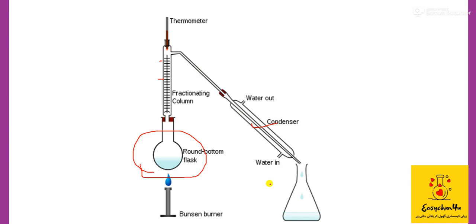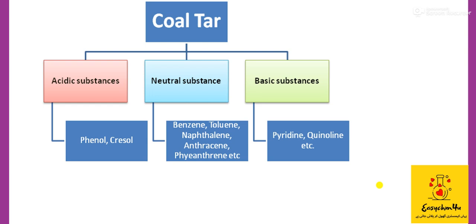Basically, the difference in boiling points allows separation. Two liquids convert into vapors at different temperatures and are collected separately through condensation. For coal tar, this same method is used at the industrial level, and we get three different types of substances: acidic substances, neutral substances, and basic substances.